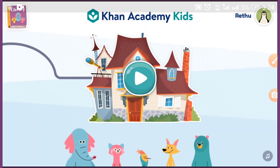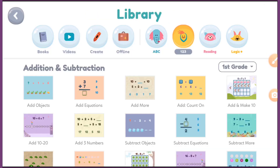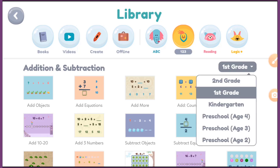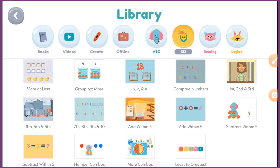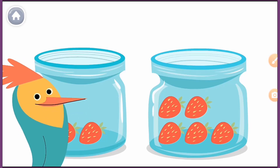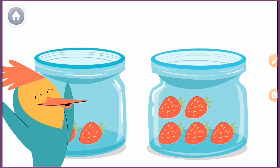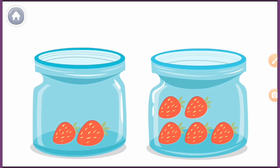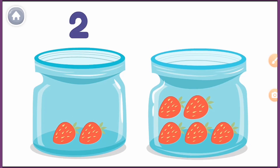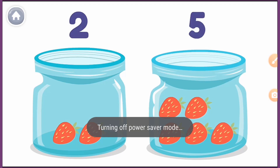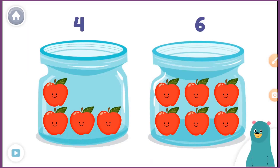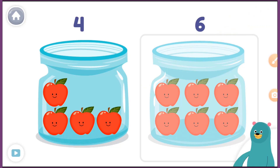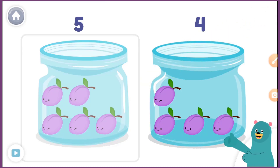Once you are done with registration, come here, select the library, then select the 1-2-3 option. Here you can select the class also. Now I am selecting grouping. The app narrates: 'Allo wants to eat more strawberries. Which jar has more? Let's count and see. This one has one, two strawberries. This one has one, two, three, four, five strawberries. So this one has more. Allo should eat from this jar.' Keep it up — you tapped the jar with more!